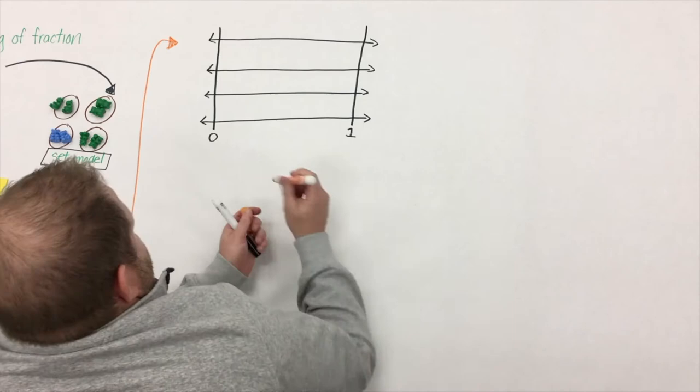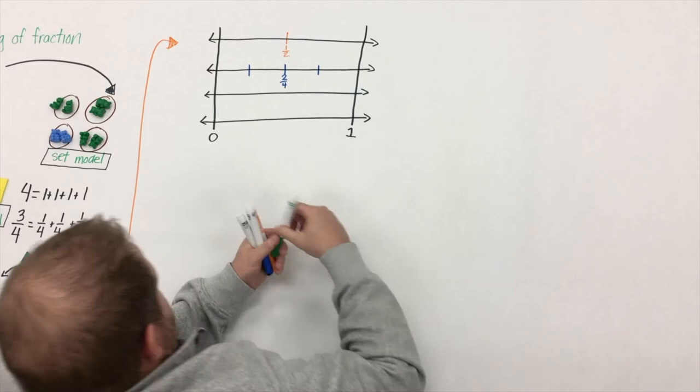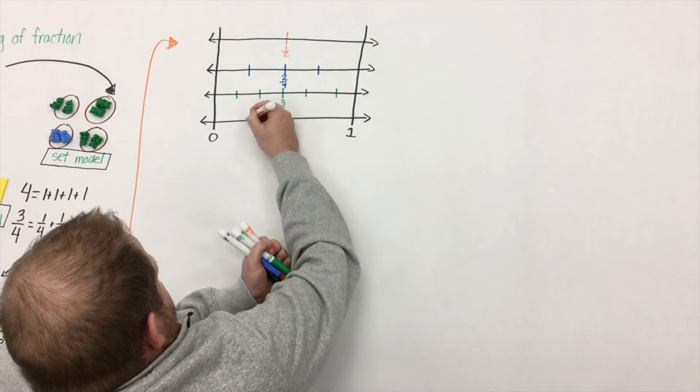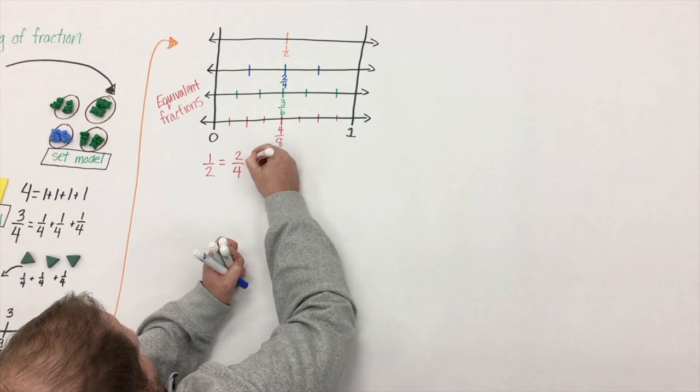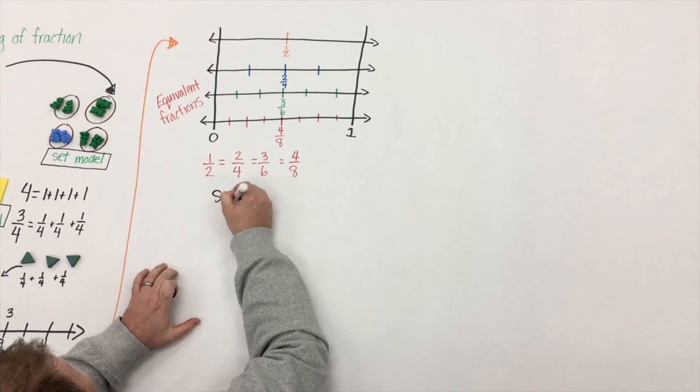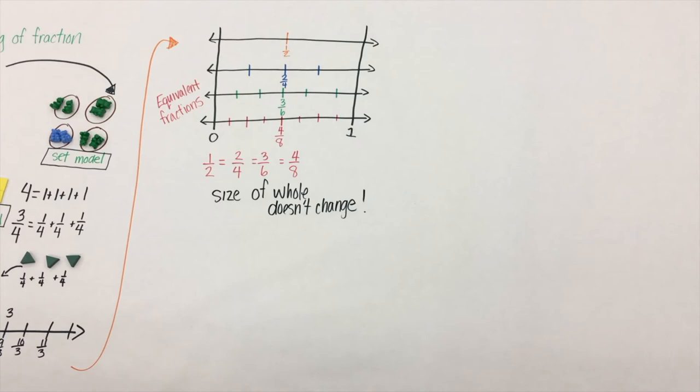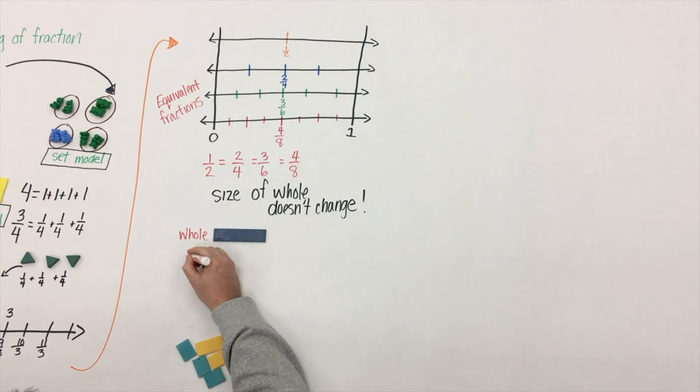Here we're going to take four lines and partition them all into equal parts. As we partition them all up into equal parts, we begin to see that some of these line up. Students are beginning to explore the idea of equivalent fractions: one-half is equal to two-fourths, which is equal to three-sixths, which is really the same as four-eighths. The big piece that students really need to see is that the size of the whole doesn't change, just the size of the parts do.